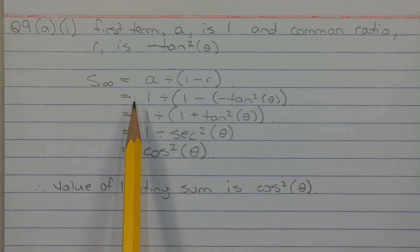we have S infinity equals 1 divided by 1 minus negative tan squared theta. Now we have a double negative here, so that turns it into a positive, so S infinity equals 1 divided by 1 plus tan squared theta.